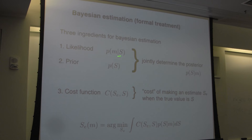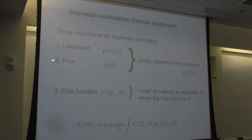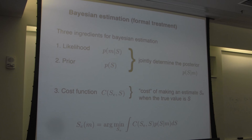Formally, what is Bayesian integration? Any Bayesian estimator has three components. One is the likelihood function — the relationship between a noisy measurement and the state of the world. The second is the prior — all the possible S values out there in the world, the variable of your interest. These two jointly provide the posterior, the probability of the stimulus given the measurement. The third component is what is called the cost function — the cost of making an estimate S_e when the true value is S.